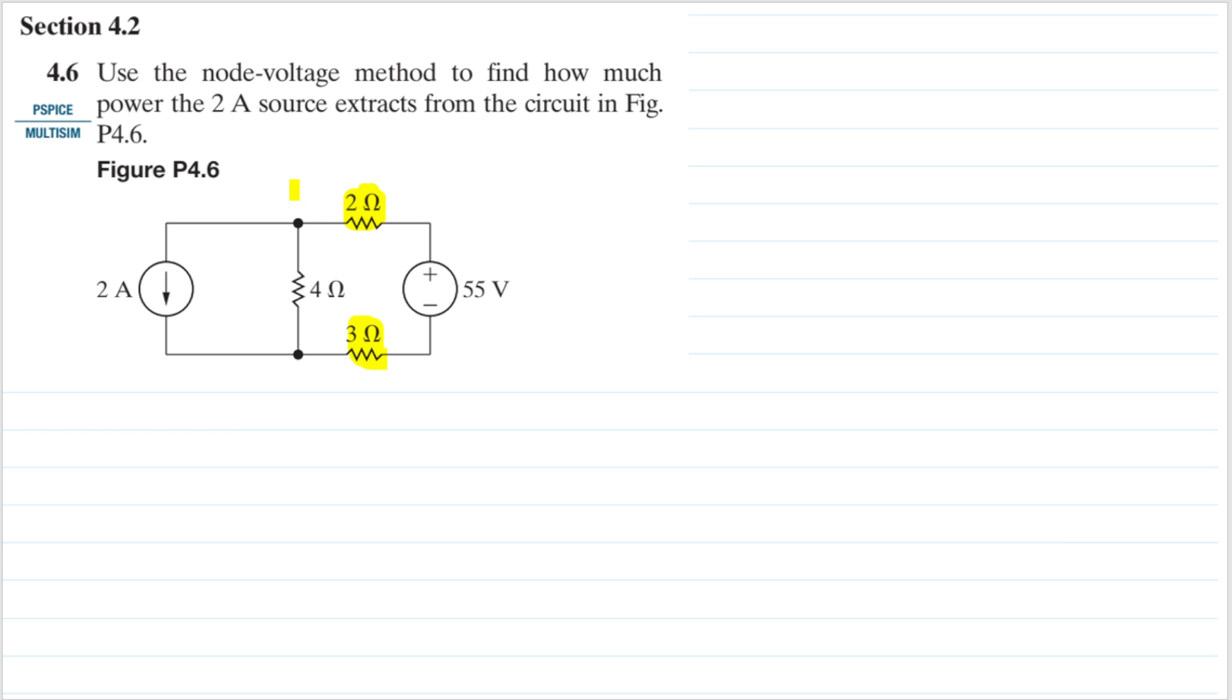Let's redraw the circuit. We have this 2 ampere current source here, and that will be in parallel with the 4 ohm resistor.